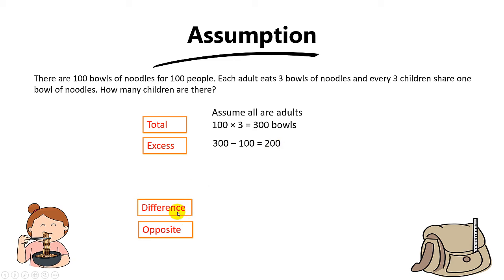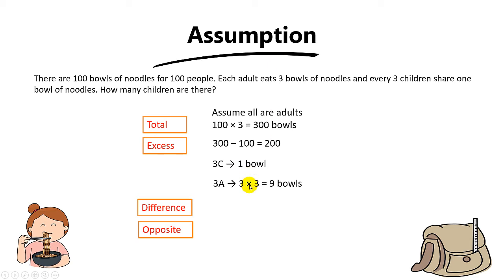Here's the tricky part: how do we find the difference between every adult and every child? Every adult eats three bowls, but every three children share only one bowl. We can't simply subtract one from the other directly. Instead, we group: three children share one bowl, and we compare that to three adults, who eat three times three — which is nine bowls. This tests your grouping concept.